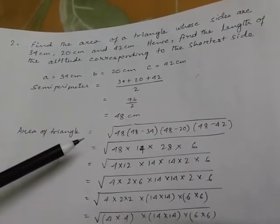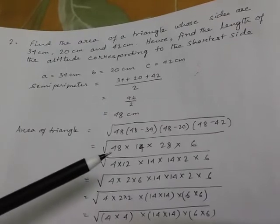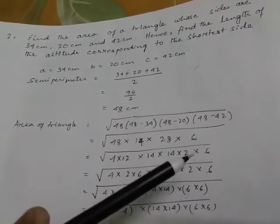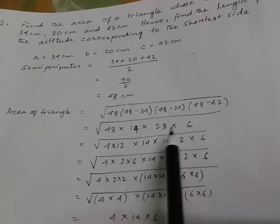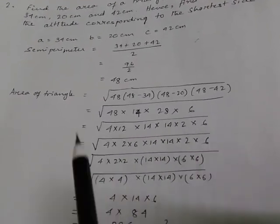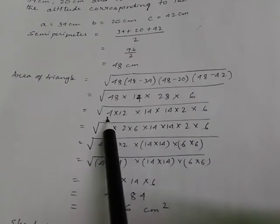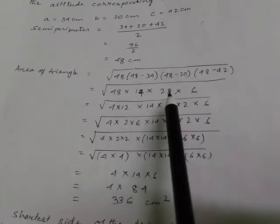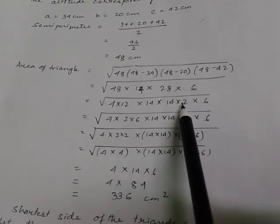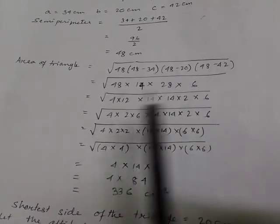Root over 48, 48 minus 34, 48 minus 20, 48 minus 42. So, 48 into 14 into 28 into 6. I have broken 48 as 4 into 12, 14 is already there, and 28 I have broken into 14 into 2, and 6.